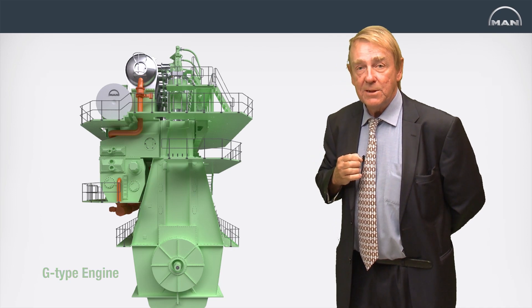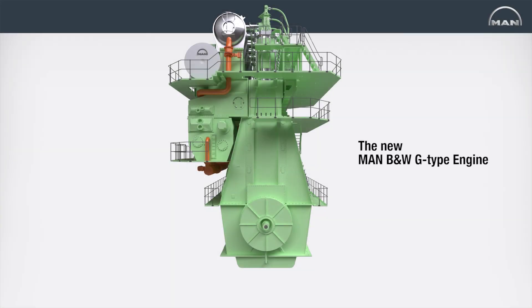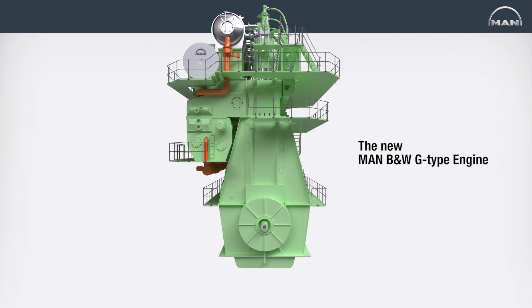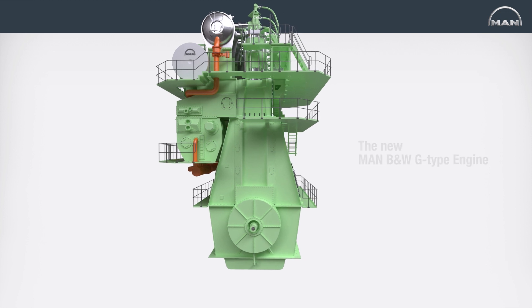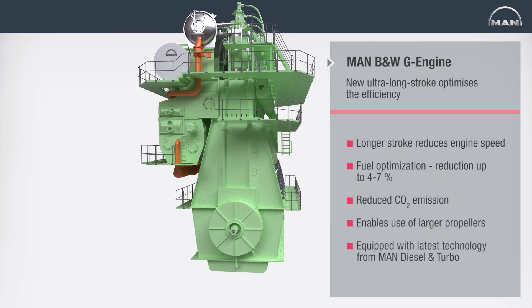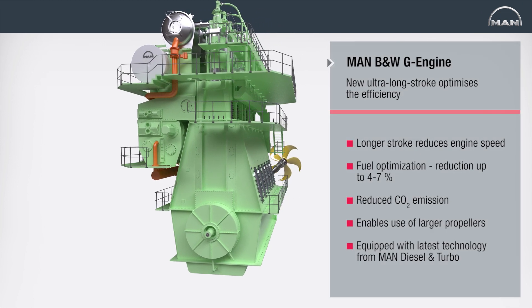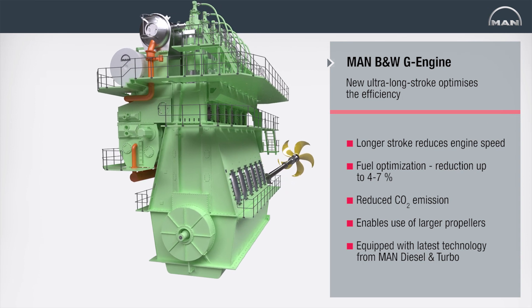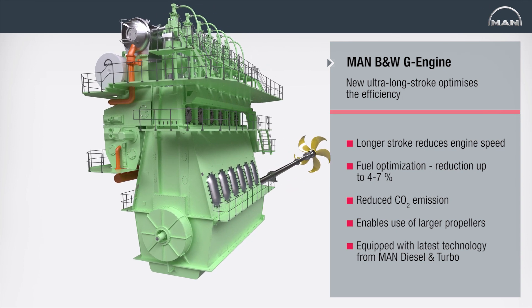The G-Type engine has a design that follows the principles of MAN Diesel & Turbo's large-bore S-Type Mk9 engine, but whose ultra-long stroke enables the reduction of engine speed, thereby paving the way for ship designs of unprecedented high efficiency.